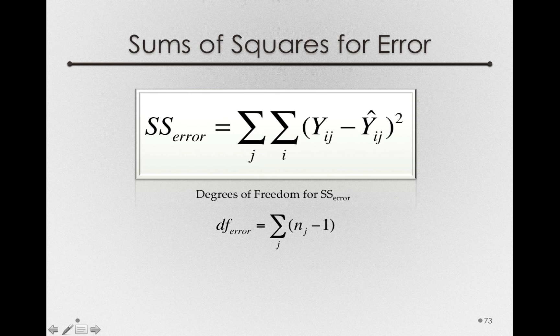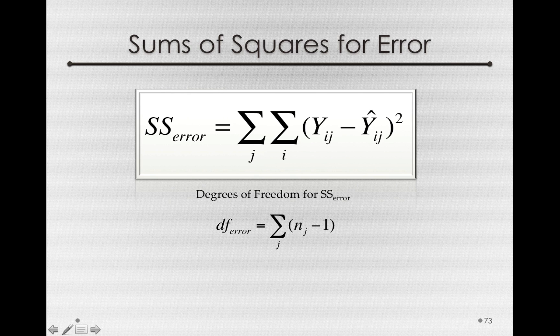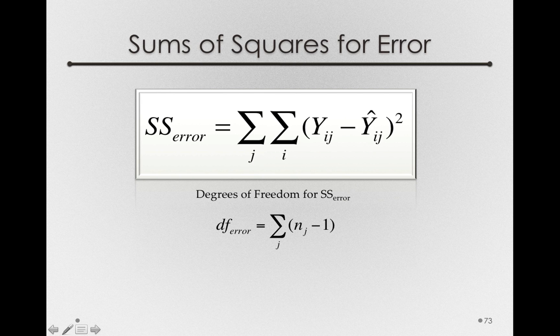Finally, we have the sums of squares for error, which use up the remaining degrees of freedom we have in our dataset. One way to look at this is that it's the number of observations in each group minus 1, then add it up across the number of groups we have.